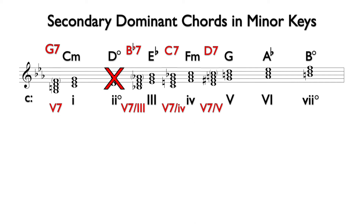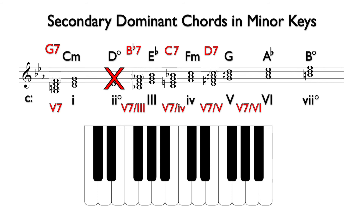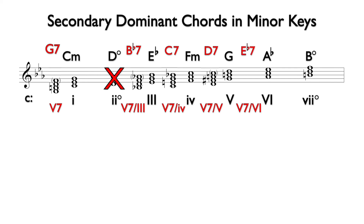Next, we will find 5 or 5-7 of 6. We find the 5 chord in A-flat, which is the interval of a perfect 5th above A-flat. This is E-flat or E-flat 7, and the notes are E-flat, G, and B-flat for the triad, with D-flat added for the 7th.